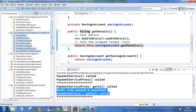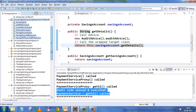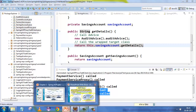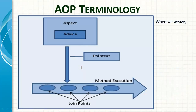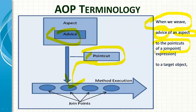That's the straightforward explanation of how the whole AOP works. In coming chapters we'll see further details, including terminologies: what is advice, what is a point cut. A point cut is a collection of different join points. When you weave advice of an aspect to the point cuts of a join point to a target object, it becomes a proxy — that's the sentence normally used to remember AOP terminologies.